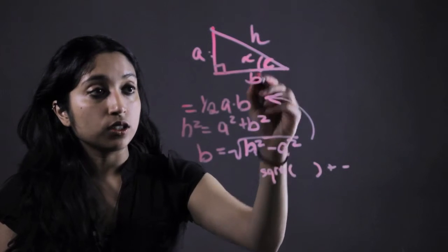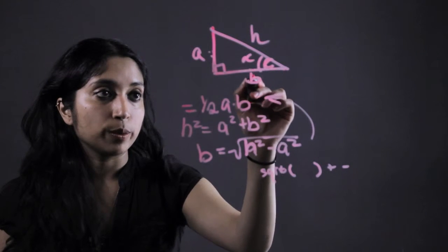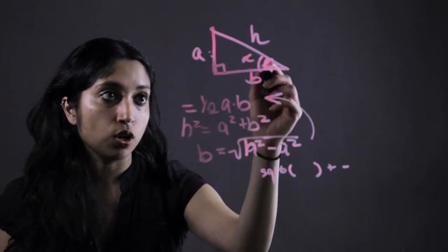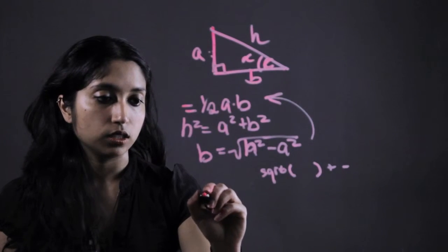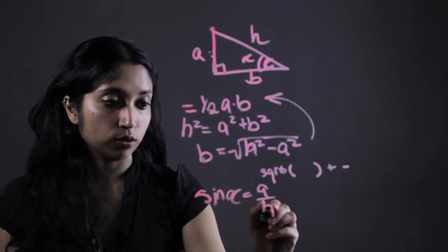Now if we're given an angle we would also just have to solve for whichever missing side. So say we were trying to solve for a. We know that sine of alpha equals a over the hypotenuse.